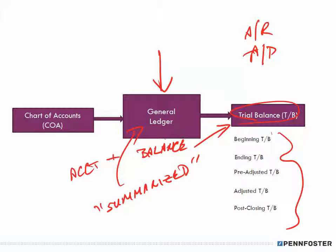In the last video I talked about the chart of accounts, which is nothing more than a listing of the general ledger accounts. The general ledger accounts have balances, and we can create a trial balance, which is a summarization of that information from the general ledger.